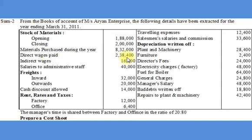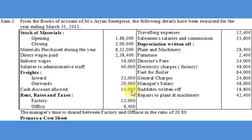Indirect Wages Rs. 16,000; Salaries to Administrative Staff Rs. 40,000; Freights Inward Rs. 32,000; Outward Freight Rs. 20,000; Cash Discounts Allowed Rs. 14,000; Rent, Rates and Taxes — Factory Rs. 12,000 and Office Rs. 6,400.